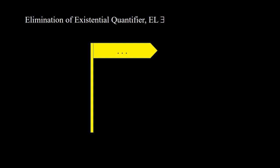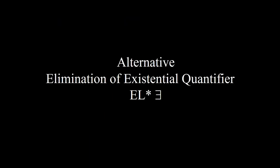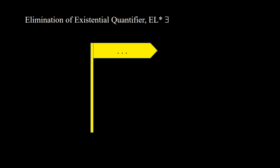Elimination of existential quantifier — we use this notation for reasoning. If we have under a rectangular or pointed flag ∃x ∈ S p(x), and also ∀x ∈ S ¬p(x), then we conclude false. Alternative elimination of existential quantifier — notation el* ∃. If we have under a rectangular or pointed flag ∃x ∈ S p(x), and also ∀x ∈ S p(x) implies q, then we can conclude q.